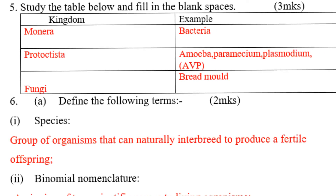Question number five: Complete the table by filling in the blank spaces. We have the kingdom column and you are told to give examples. Monera — bacteria; Protista — amoeba, paramecium, plasmodium; Fungi — bread mold.